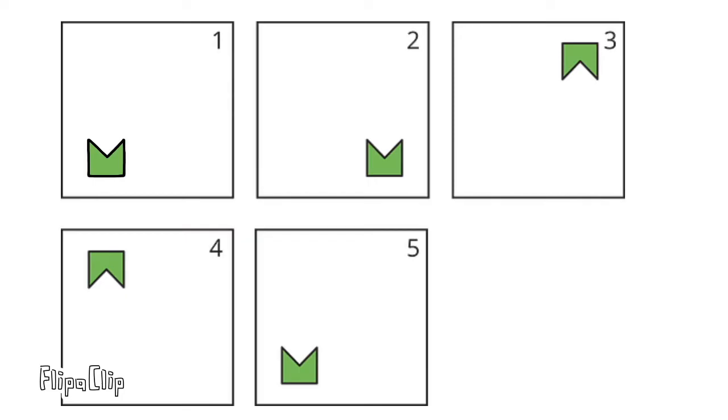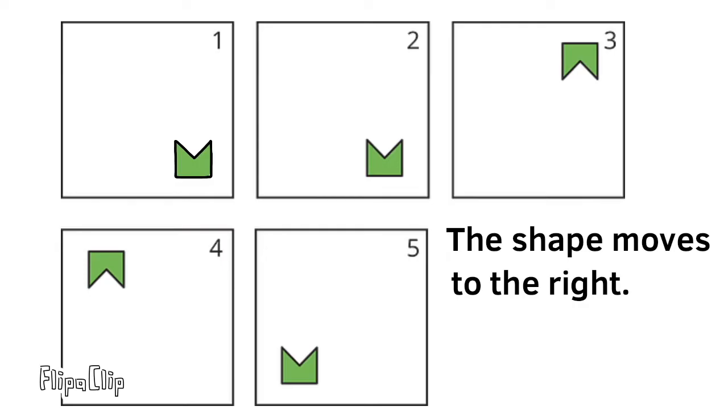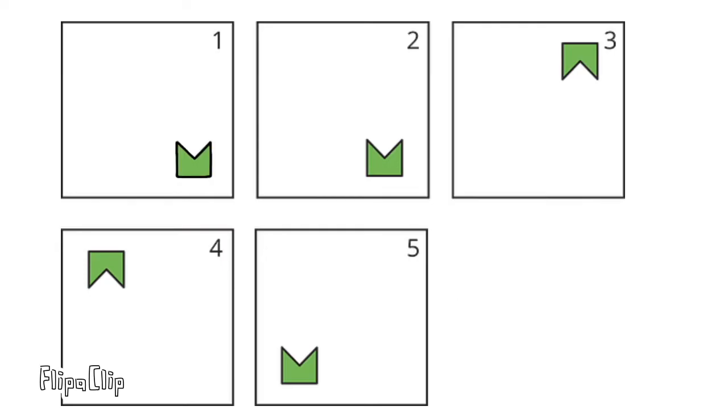For the shape to get from its frame 1 position to its frame 2 position, it moves to the right. For the shape to get from the frame 2 position to the frame 3 position, it moves up, then it rotates 180 degrees.